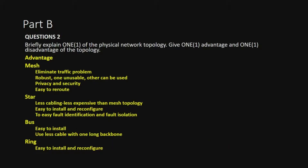Question 2 asks you to briefly explain one physical network topology. Options include mesh, star, bus, ring, or hybrid. Choose one and explain it. For example, if you choose mesh topology, explain what mesh topology is. Then give one advantage and one disadvantage of that topology — referring specifically to the topology you mentioned.